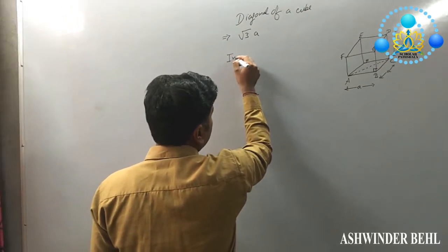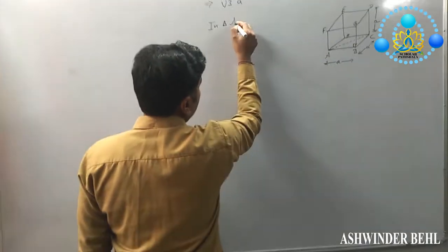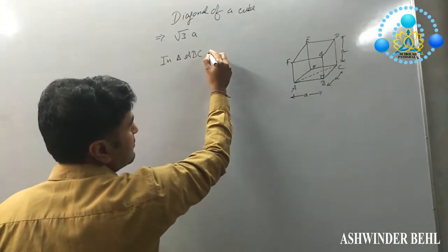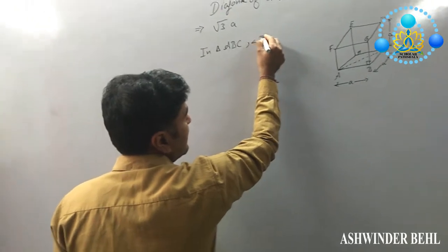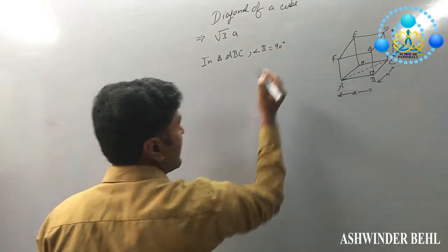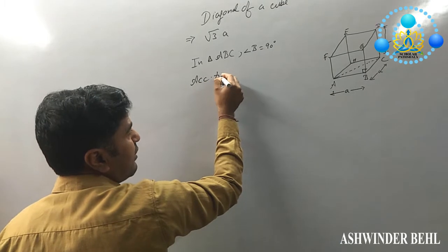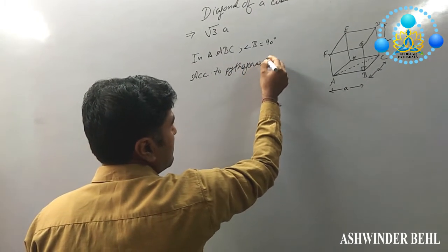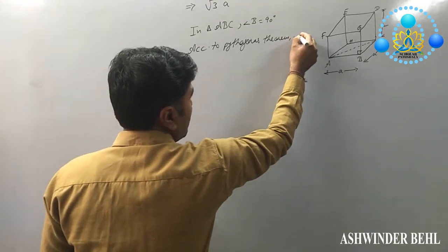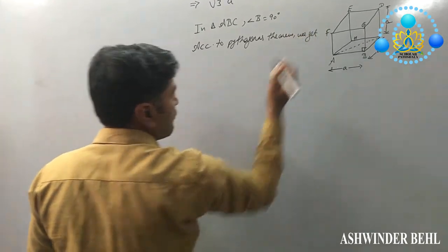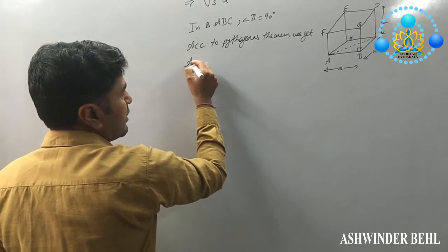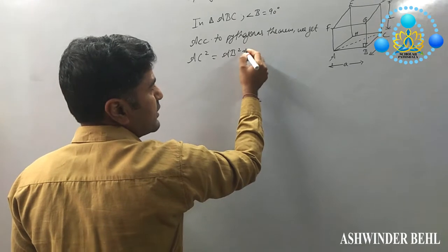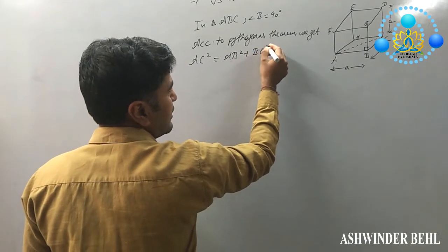How can we prove now? In triangle ABC, angle B is equal to 90 degrees. According to Pythagorean theorem, we get AC square equals AB square plus BC square.